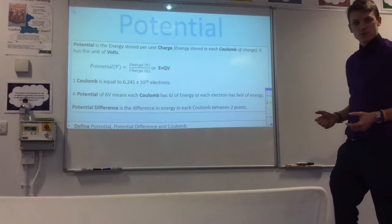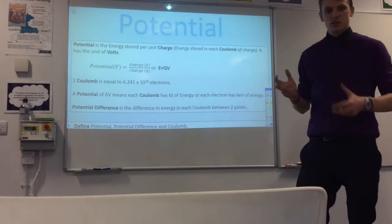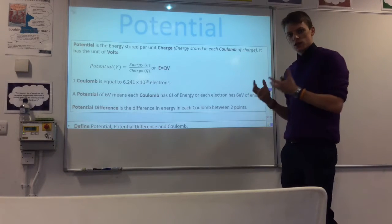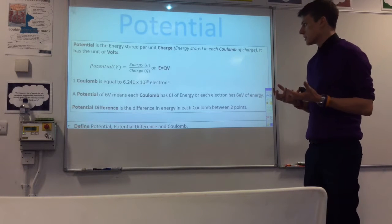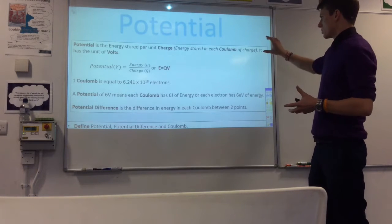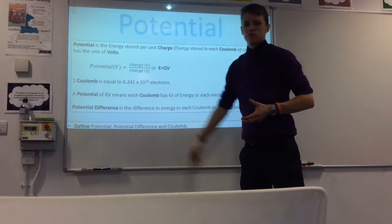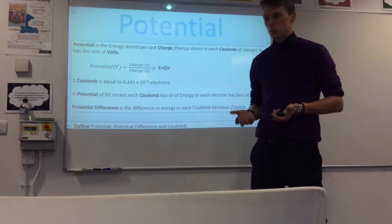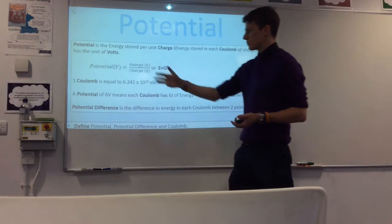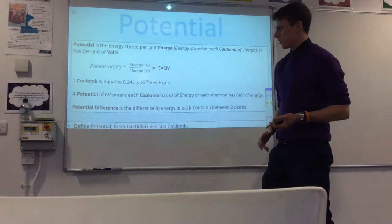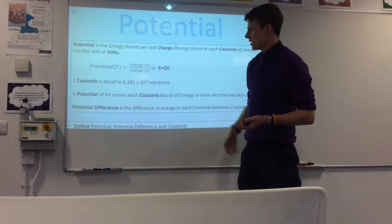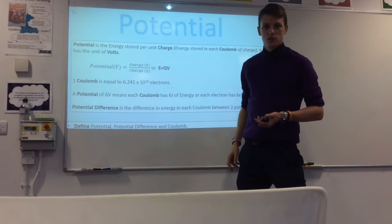Okay so let's start off with potential. Potential is essentially the amount of energy that each unit of charge in your circuit has. The unit of charge that we use is the Coulomb and the unit of potential difference is going to end up being the volt. Obviously the unit of energy is a joule. So we can calculate the potential or the energy in each charge by taking the amount of energy and dividing it by the number of charges that you have.